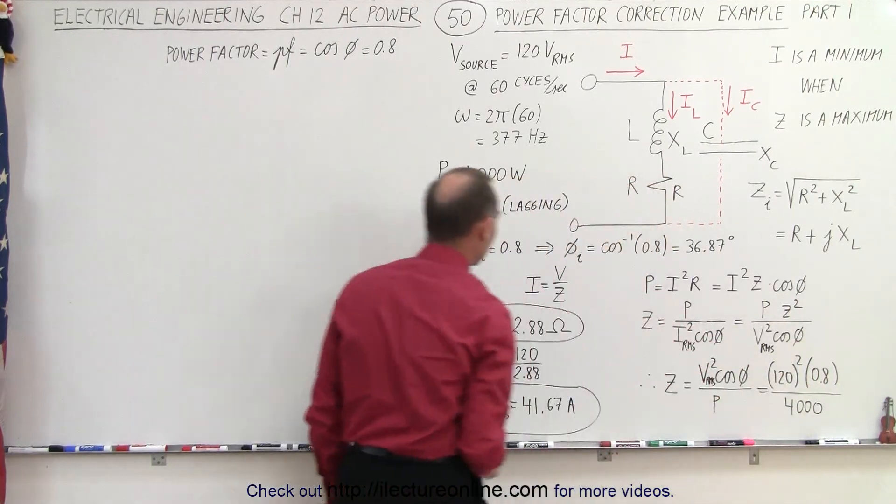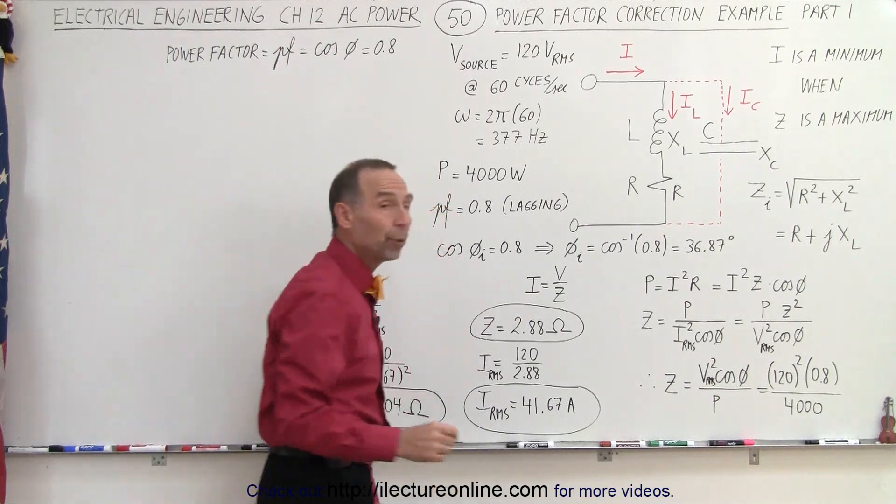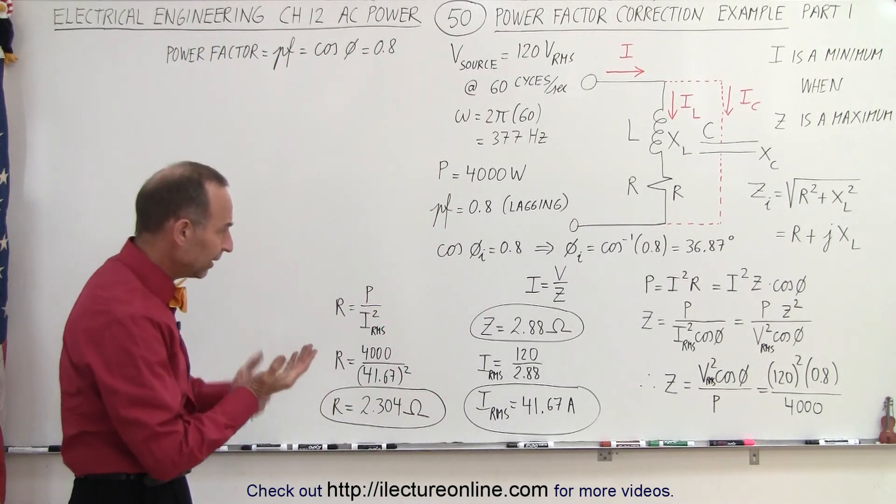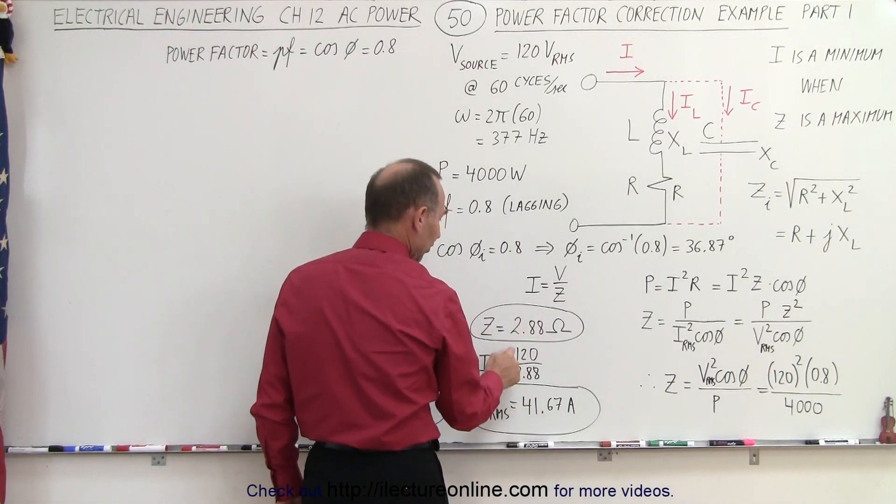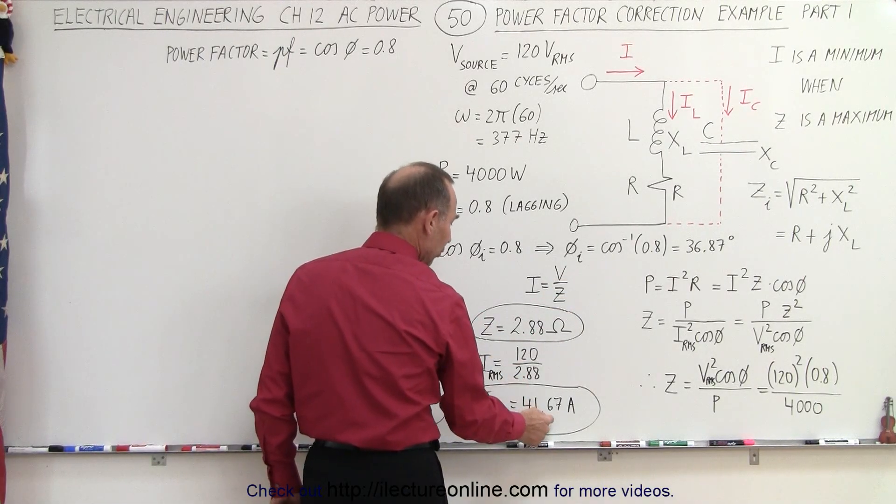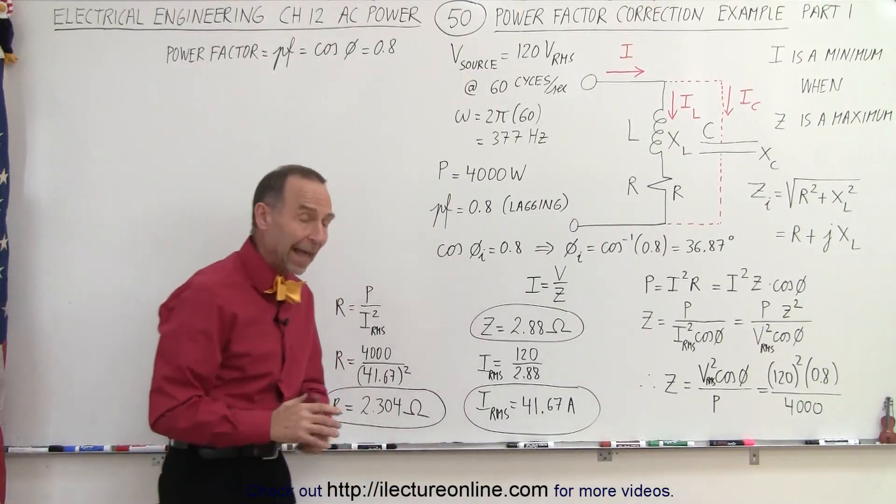When we calculate that, we get the impedance to be 2.88 ohms. And then, of course, since IRMS is equal to V over Z, that's 120 volts divided by 2.88, or 41.67 amps. That's the current provided before the capacitor is added.